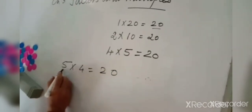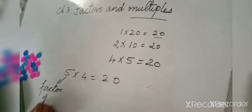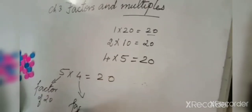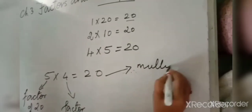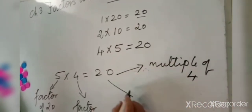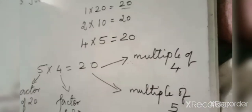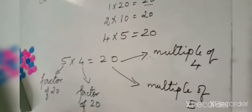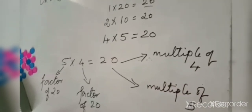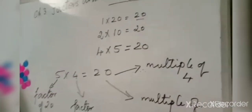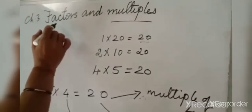Now let me give you one example of a multiple. What is a multiple? Suppose if I take 5 into 4 is equal to 20. We have already learned that 5 is a factor of 20, and 4 is also a factor of 20. Whereas we can say that 20 is a multiple of 4, and 20 is also a multiple of 5. Multiple of a number are obtained by multiplying that number by any whole number.